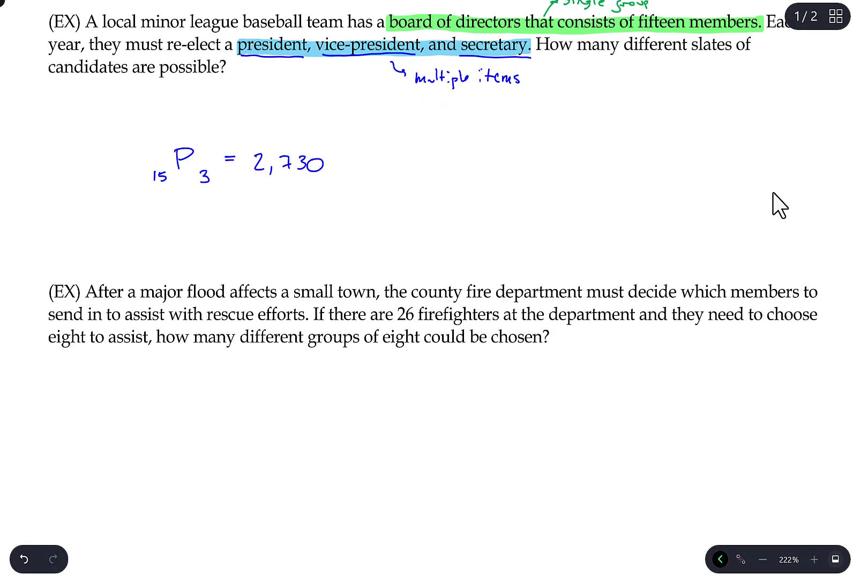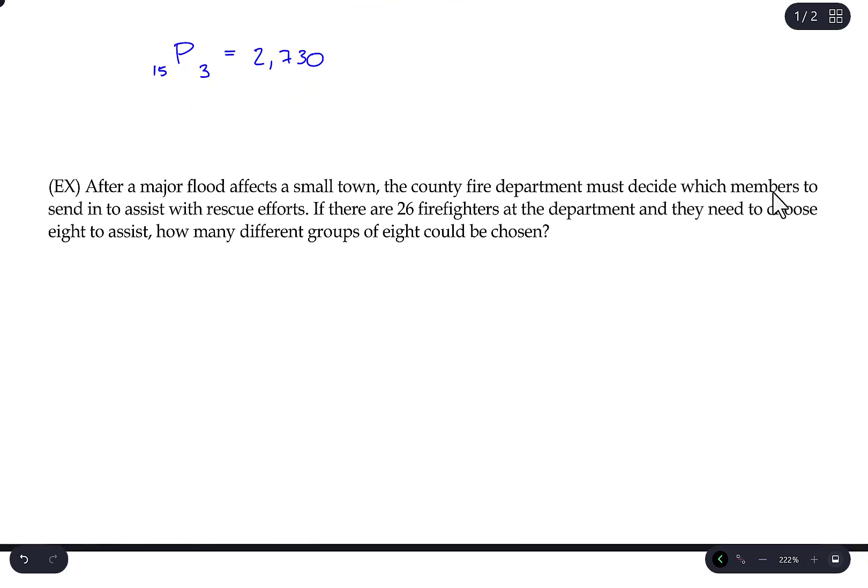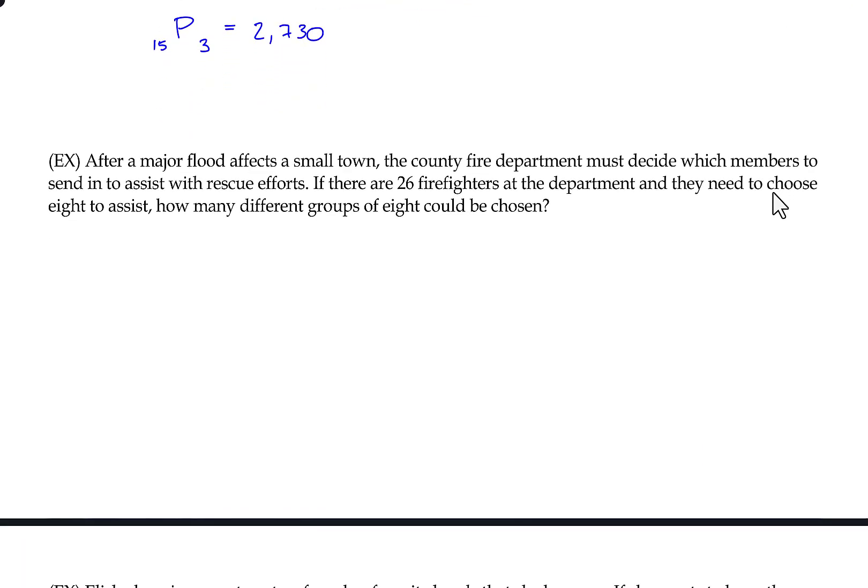And you'd get the same answer from using the formula. After a major flood affects a small town, the county fire department must decide which members to send in to assist with rescue efforts. If there are 26 firefighters at the department and they need to choose eight to assist, how many different groups of eight could be chosen?